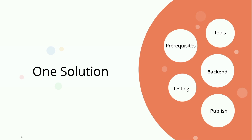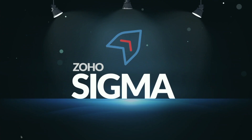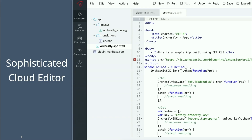Why not have one solution for all of these problems? One solution to take care of all the factors — before, during, and after development — that lets you concentrate only on the logical part of the extensions: how you're going to integrate a Zoho service with a third-party app. That is why we introduced Zoho Sigma. It provides a set of features and different tools for building extensions so you can focus only on the logic.